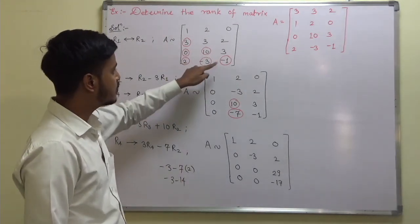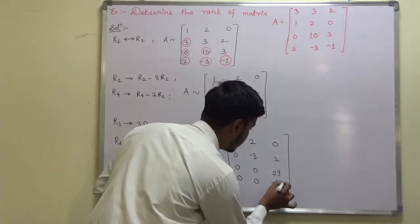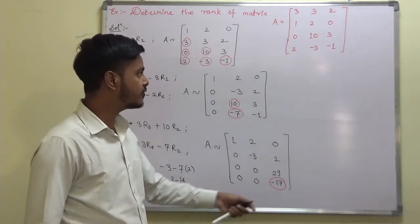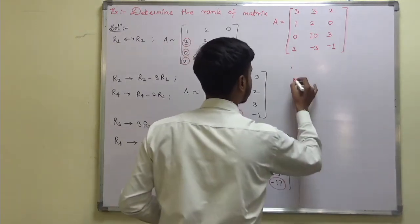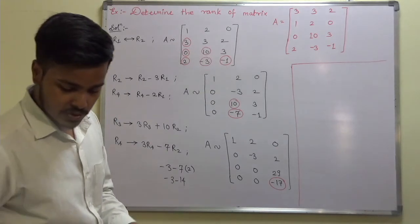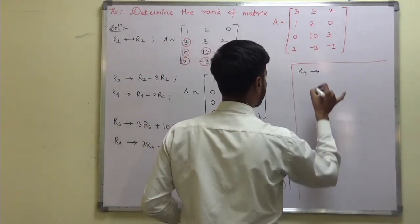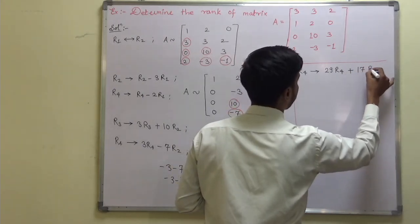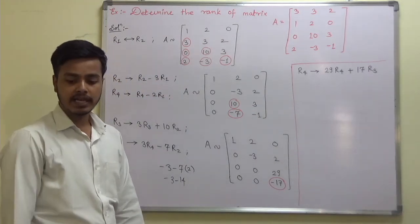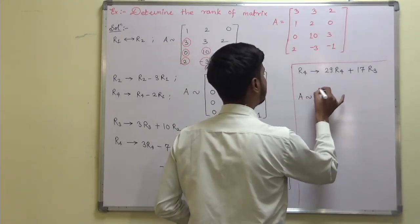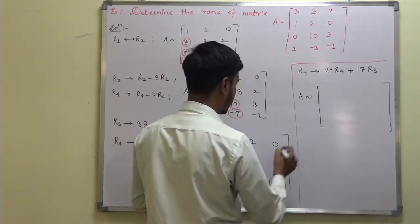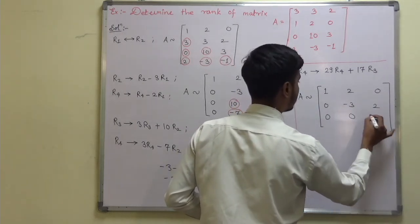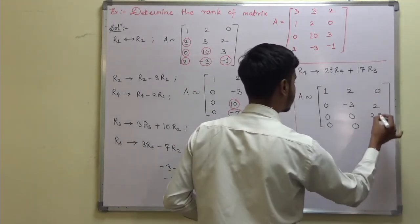After getting these positions zero, my objective is to make the last remaining non-zero position in r4 equal to zero. So r4 changes to 29r4 plus 17r3. Matrix A becomes, keeping the first three rows as 1 2 0 / 0 minus 3 2 / 0 0 29, and the final row becomes 0 0 0.